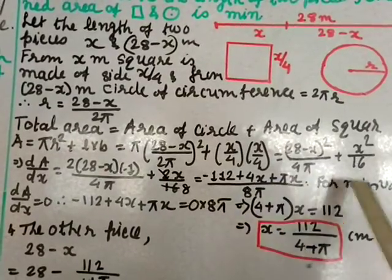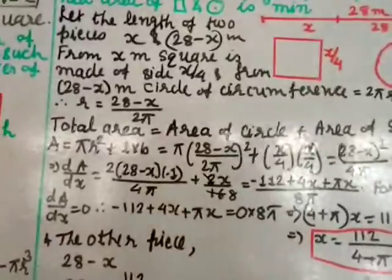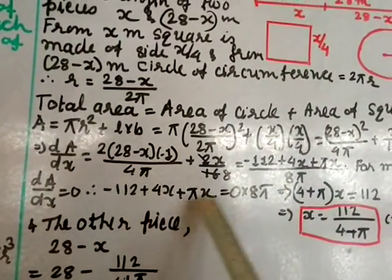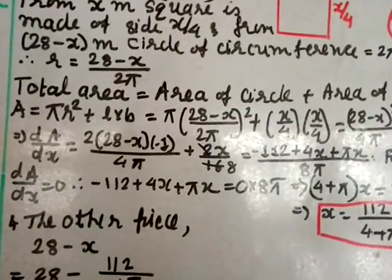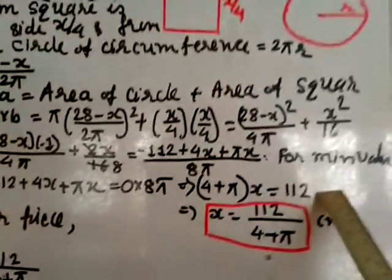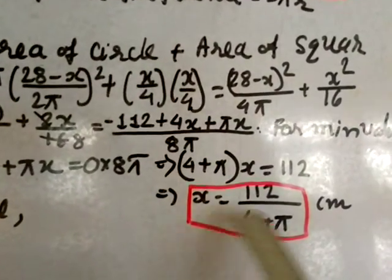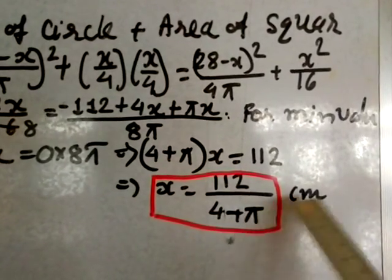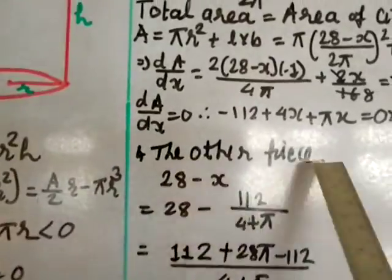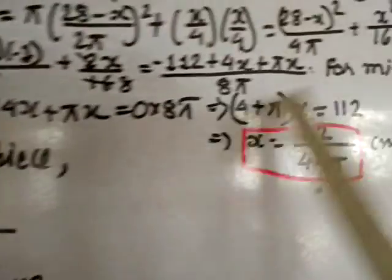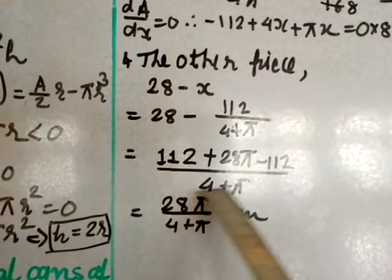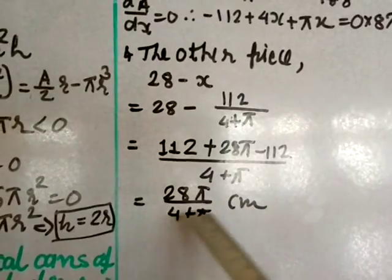For minimum area, set dA/dx = 0: minus 112 plus 4x plus πx = 0. Taking x common from the x terms: x(4 + π) = 112, so x = 112/(4 + π) centimetres. The second piece is 28 minus x = 28 minus 112/(4 + π) = 28π/(4 + π) centimetres.